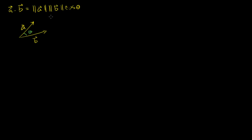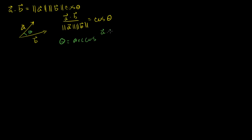We defined it in this way. And if you ever want to solve for that angle given two vectors, you could just solve for theta. It would be a·b divided by the lengths of your two vectors multiplied by each other, equal to the cosine of theta. Then to solve for theta, you take the inverse cosine — or arc cosine — of both sides, and you get theta is equal to arccos(a·b / |a||b|).